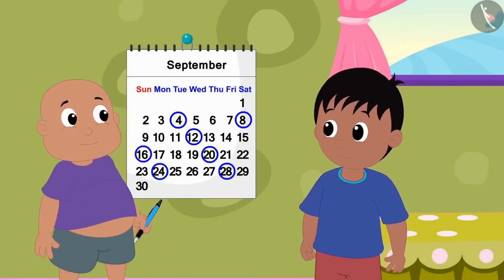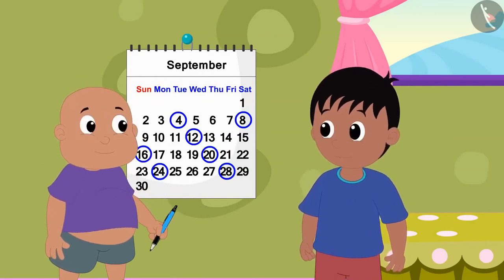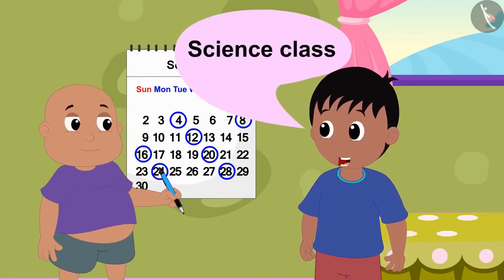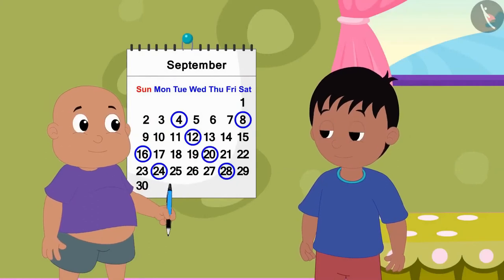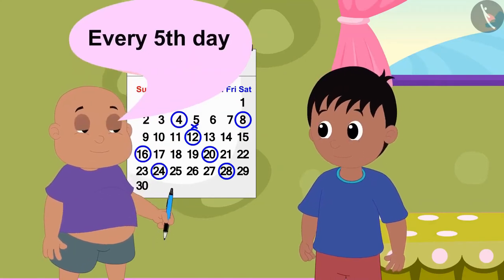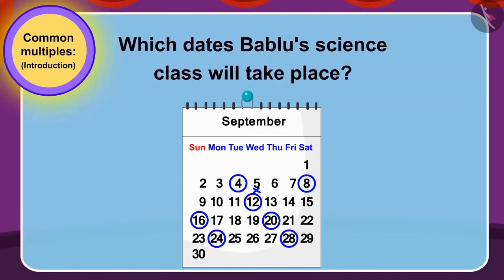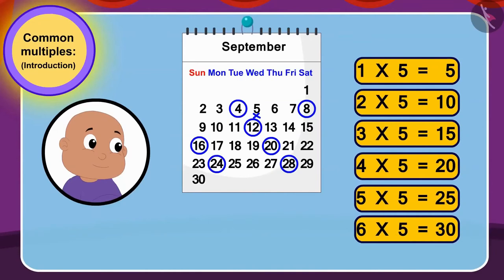Now Raju said to Bablu, your class is on so many days and you have also enrolled in science class. So, on what days will your science class be? Bablu told Raju that his science class would be every fifth day. Children, can you use multiples to tell on which dates Bablu's science class will take place? Well done, children. Your answer is absolutely correct.